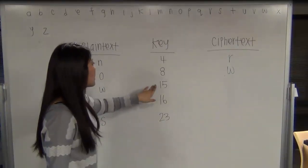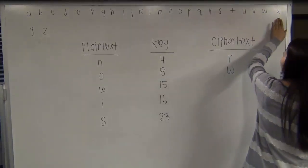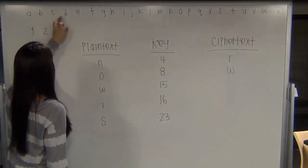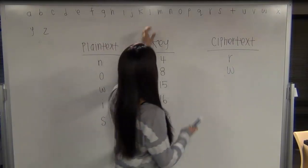And then W, key 15. Counting down 15 positions: 1, 2, 3, 4, 5, 6, 7, 8, 9, 10, 11, 12, 13, 14, 15. And then you get L.